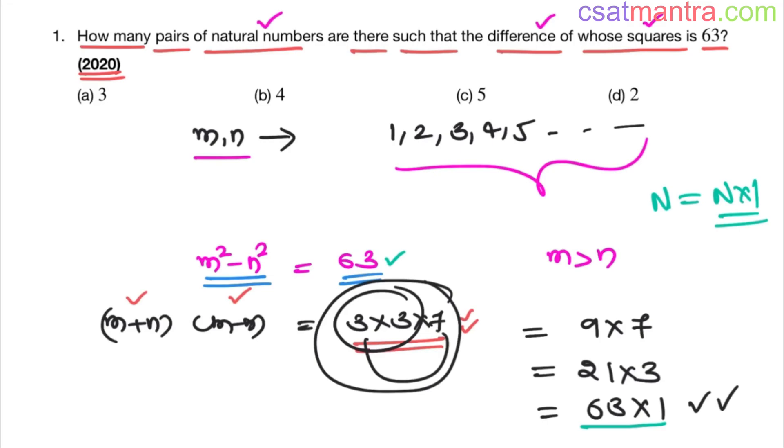If a bigger number is given it's hard to get the factors. That's why we have written 3 into 3 into 7 and then combining them. These are the only two possibilities and then this one.